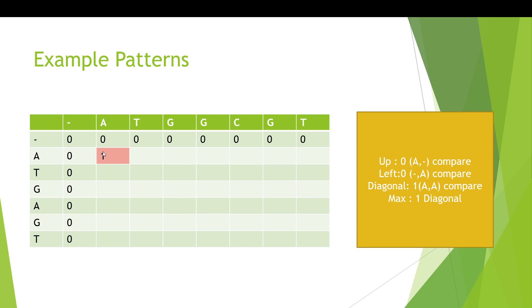Now let's look at the first data cell in the matrix. You can come from three directions: from the left, from above, or diagonally. From the left you get a dash and an A, which is zero, so zero plus zero is zero. From above you get an A and a dash, which is also zero from our scoring matrix, so zero plus zero is zero. From the diagonal you get an A and an A, which is a score of one, so zero plus one is one. The max of zero, zero, and one is one, so you write one here.